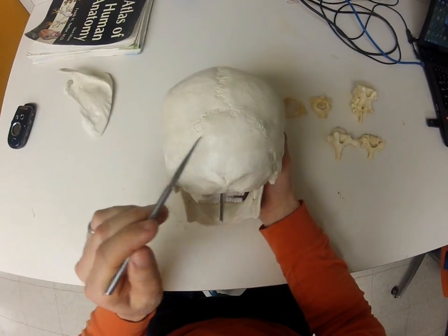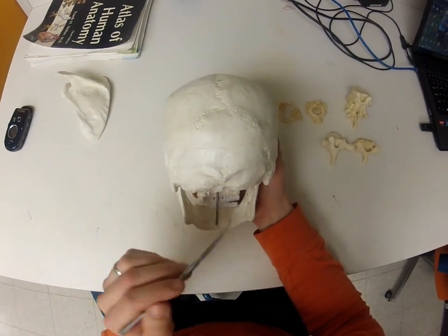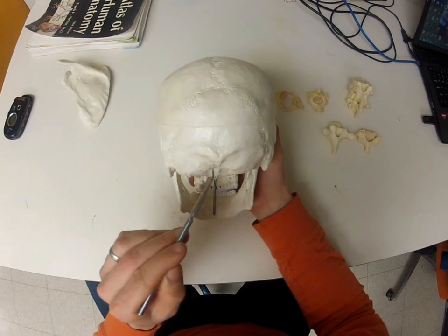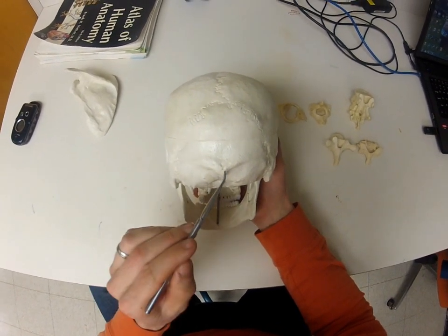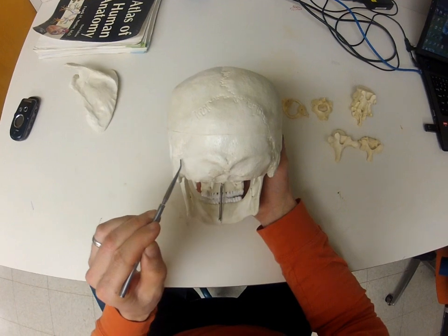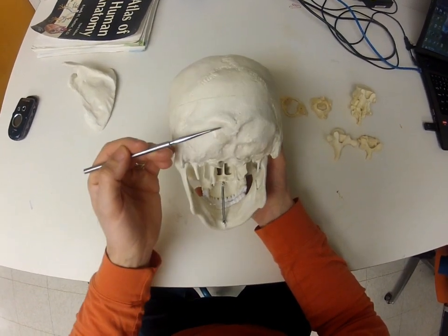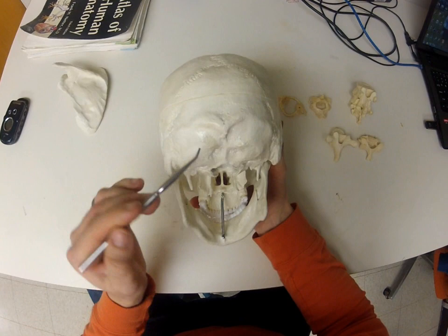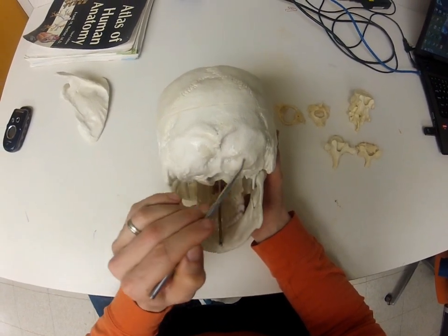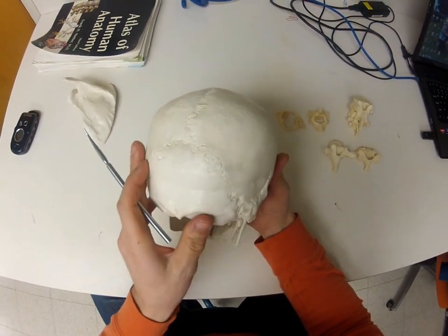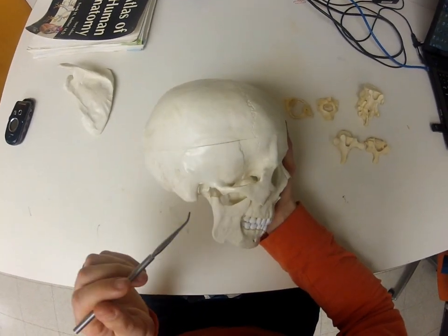On the posterior side we have the occipital bone. On the occipital bone we have this point here called the external occipital protuberance. Moving laterally off of this point is the superior nuchal line, and dropping down inferiorly from there is the inferior nuchal line.